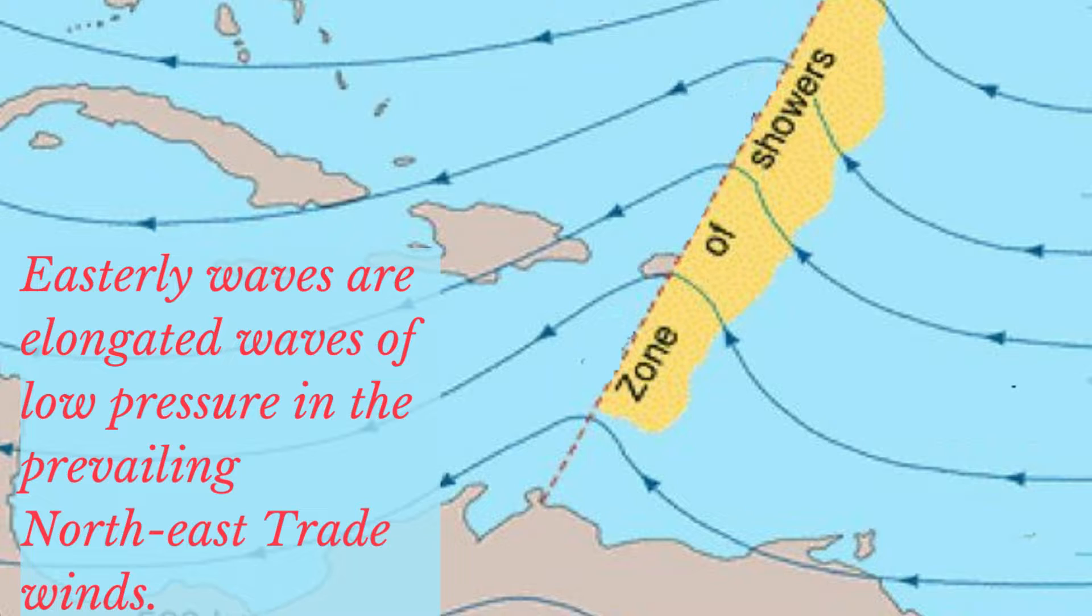The easterly wave is an elongated area of relatively low pressure. Unlike a hurricane, for example, this system does not have a closed isobaric pattern.